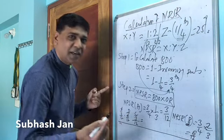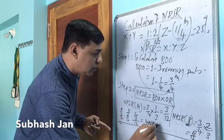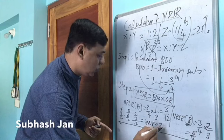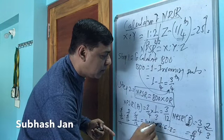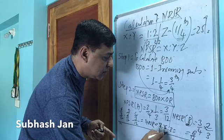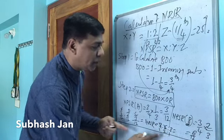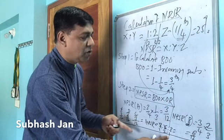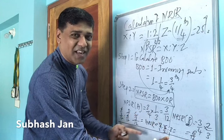The new ratio is equal to 3 is to 6 is to 3. That is nothing but 3 ones are 3, 3 twos are 6, 3 ones are 3. 1 is to 2 is to 1. Again you confirm whether the third fellow is one-fourth or not. 1 plus 2 is 3, 3 plus 1 is 4, one-fourth. This is correct.